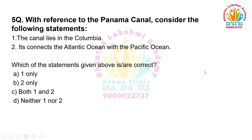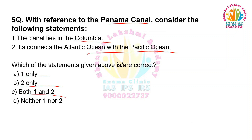With reference to the Panama Canal, consider the following statements. The canal lies in Colombia. It connects the Atlantic Ocean with the Pacific Ocean. Which of the statements given above are correct? One only. Two only. Both one and two. Neither one nor two.